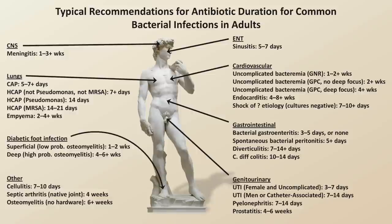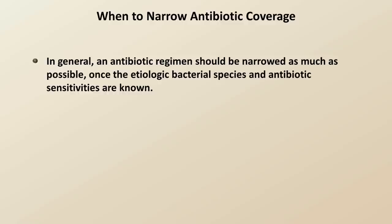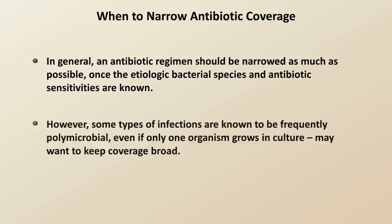In a patient who has initially started on multiple antibiotics or a single very broad antibiotic, how does the clinician know when to narrow antibiotic coverage? In general, an antibiotic regimen should be narrowed as much as possible once the etiologic bacterial species and antibiotic sensitivities are known. However, some types of infections are known to be frequently polymicrobial even if only one organism grows in culture, in which case the clinician may want to keep coverage very broad — examples include deep diabetic foot infections or an empyema that only grows a single organism.